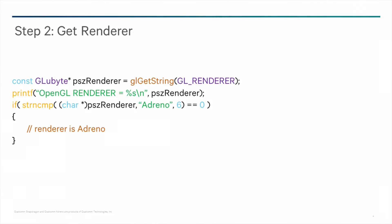For step two, after confirming that the vendor of the GPU is Qualcomm, the renderer needs to be determined. This is done using the glGetString call again, this time with the GL_RENDERER parameter. The string returned should contain Adreno followed by a trademark symbol and a version number.